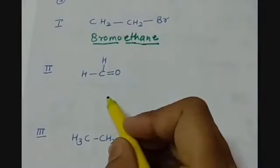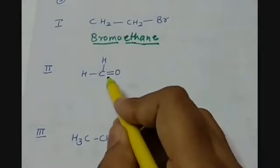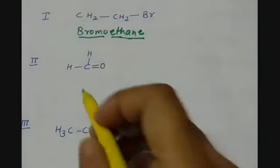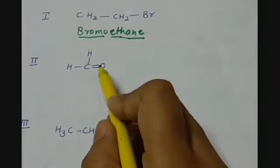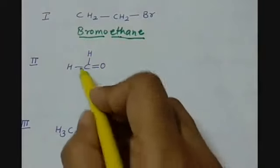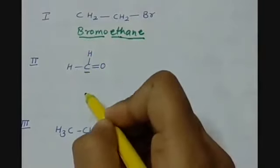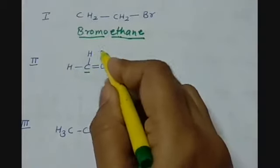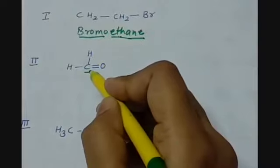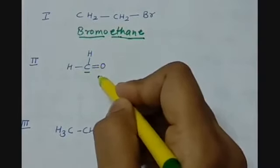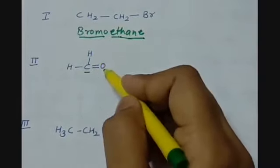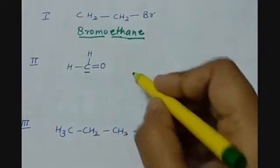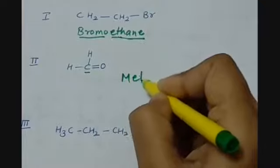The second compound is HCHO. CHO means one carbon atom with an aldehyde group. The word root will be meth and the functional group suffix will be al, so the parent chain is methane and al is the functional group. The IUPAC name is methanal.